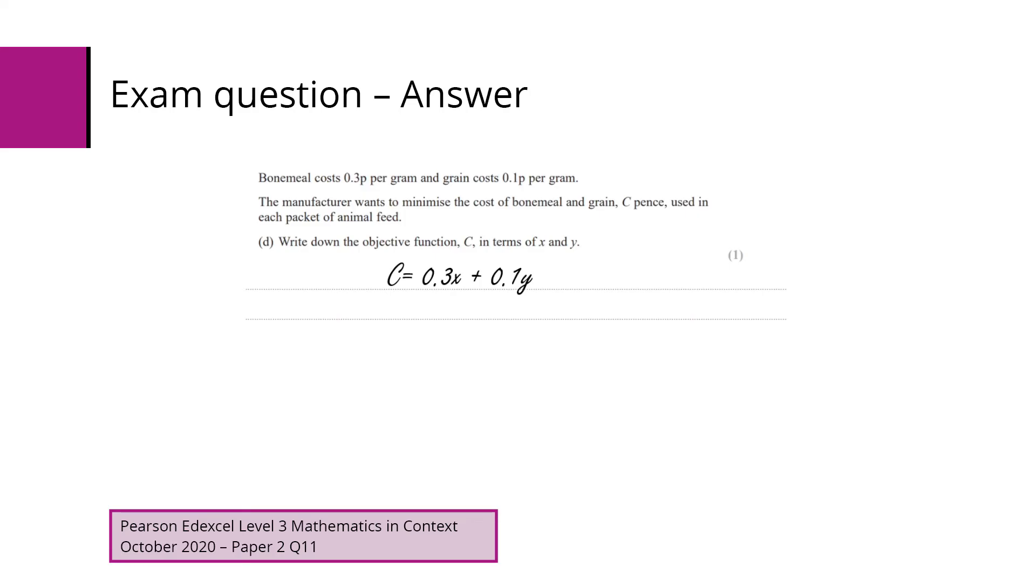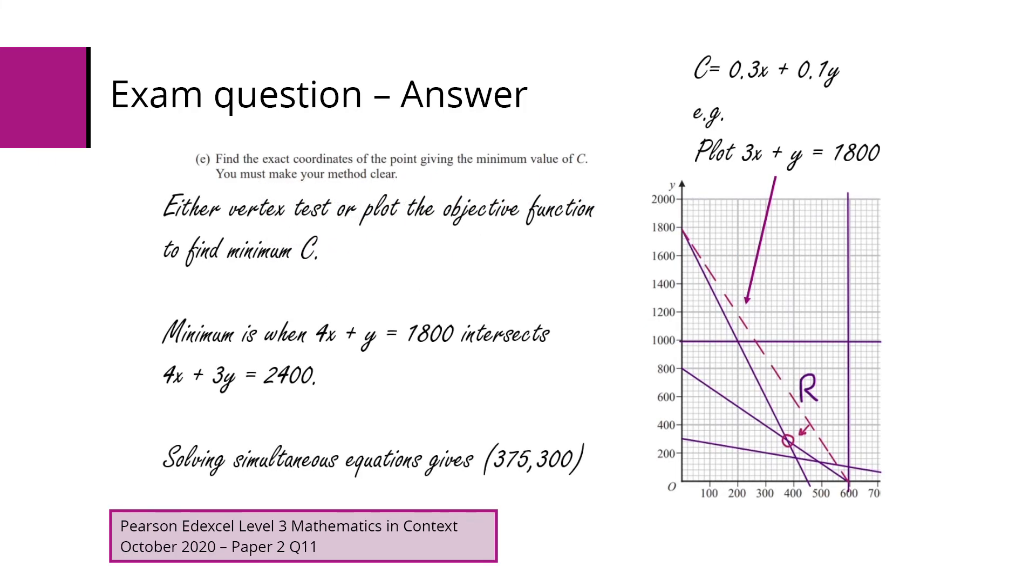So for part D, if it's 0.3 pence per gram, 0.1 pence per gram for the bone meal and the grain, we can therefore say that C must equal 0.3x plus 0.1y. We can then plot this objective function or use the vertex method to find our minimum value for C.